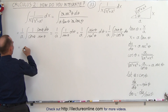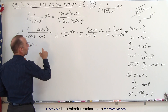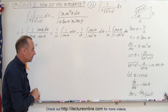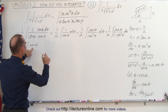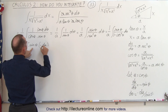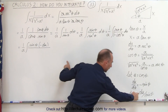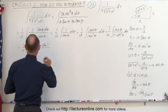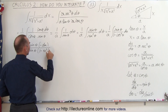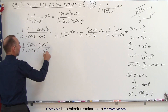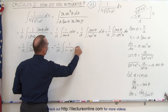This now becomes 1 over a times the integral of sine of theta times dθ — which is negative du divided by the sine of theta. The sine of theta cancels out. And in the denominator we write 1 minus u squared. So this becomes minus 1 over a times the integral of 1 over 1 minus u squared du.